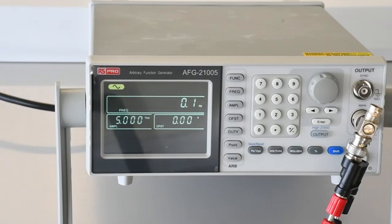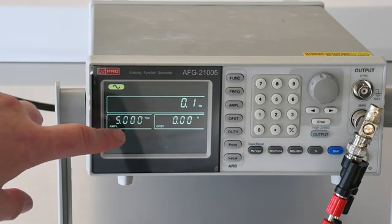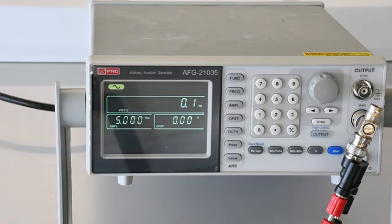Now we can set up our signal generator. Here I've set the frequency as low as possible at 0.1 hertz and we're going to apply a 5 volt peak to peak AC signal. Make sure that the voltage that you use isn't too large so that you don't heat up or damage the wire.